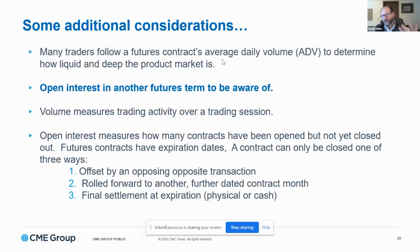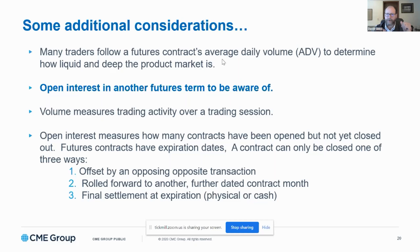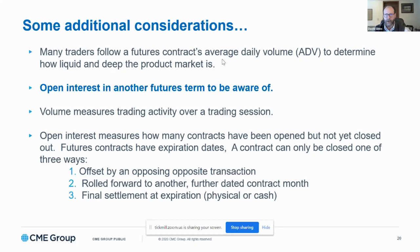In futures, we also use another term called open interest. Open interest refers to any futures position put on in a session that isn't offset by the end of that session. So if I buy 10 e-mini futures contracts in a session and I sell five, I will have offset five of the 10, leaving me with a remaining balance of five long positions. I've created trading volume, but I've also added five additional contracts to that contract's open interest because they're open and haven't been offset yet. Open interest represents the amount of futures contracts created in a previous session that have yet to be offset prior to expiration.